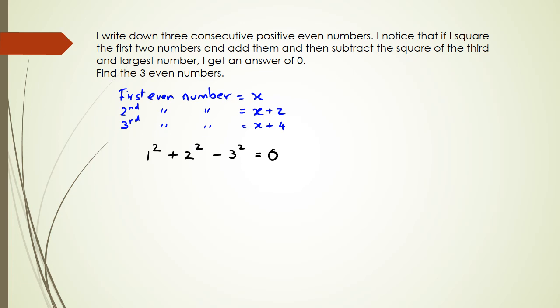Okay, so our first even number is x. So that's going to be nice and simple. That's x squared. Our second even number is x plus two squared, minus my third even number is x plus four squared. And all of this is equal to zero.